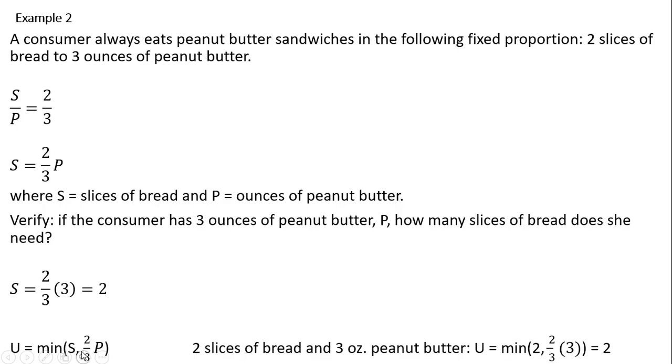We can verify this. Let's put in two slices of bread and three ounces of peanut butter. The minimum of these two numbers, so this two-thirds times three will just leave us two, and we'll get a utility of two.